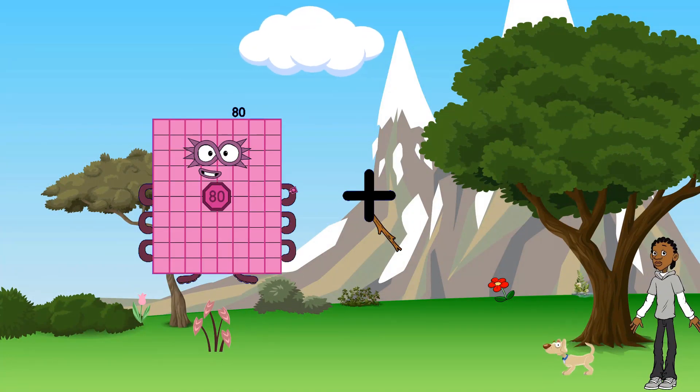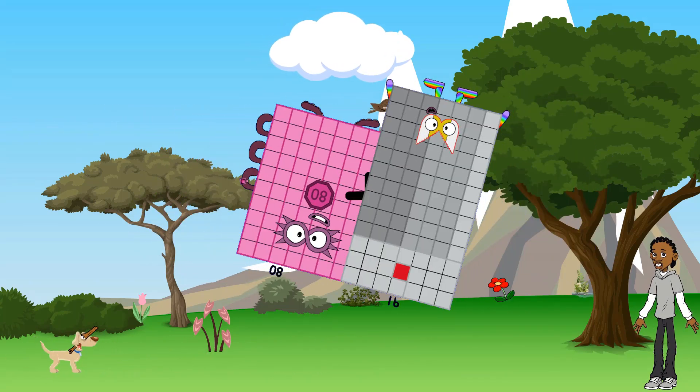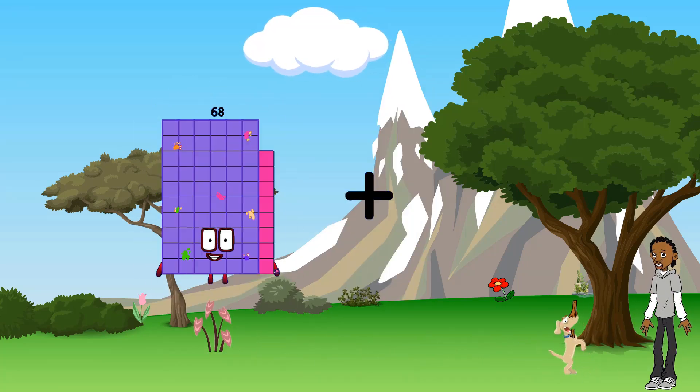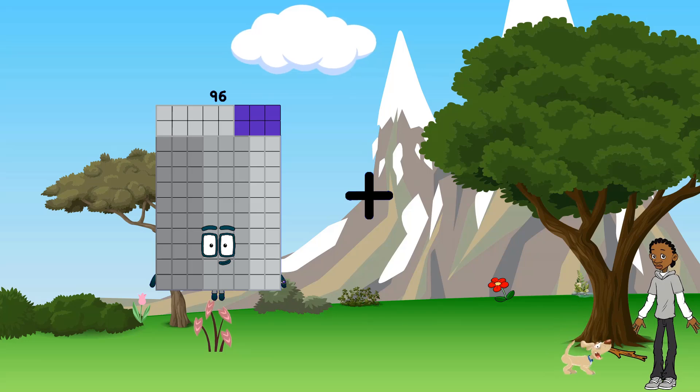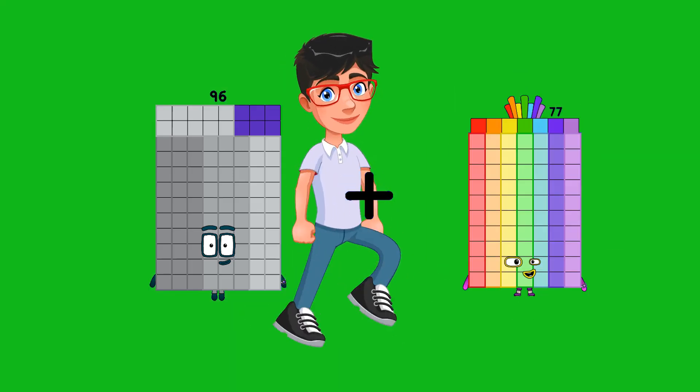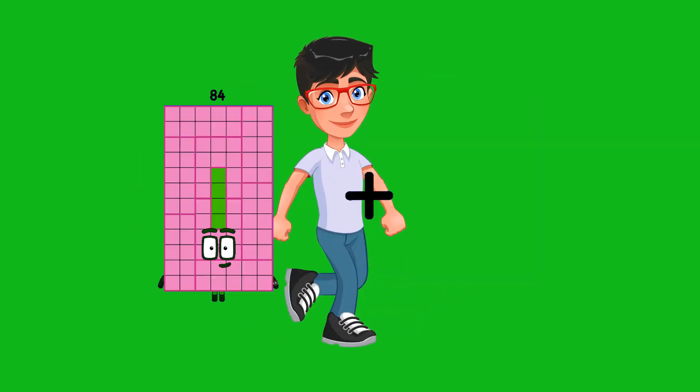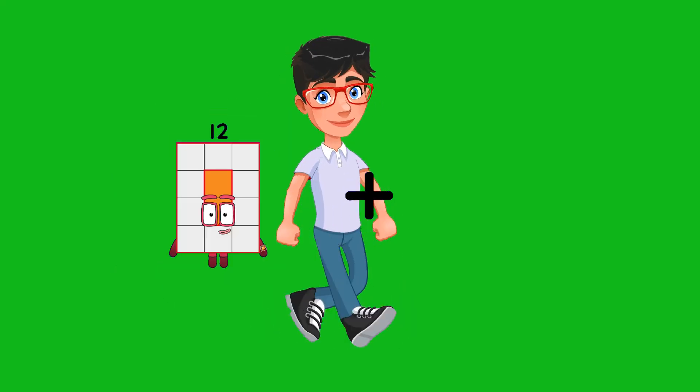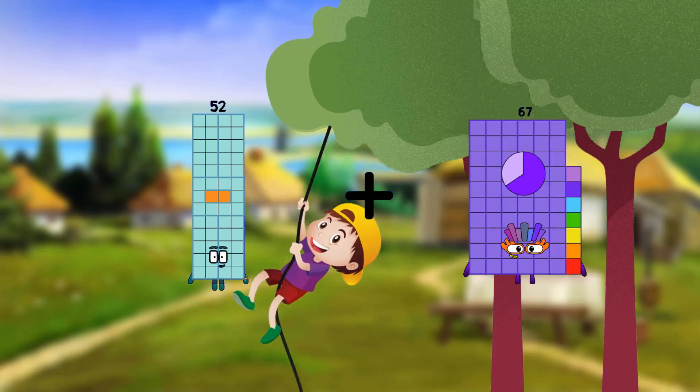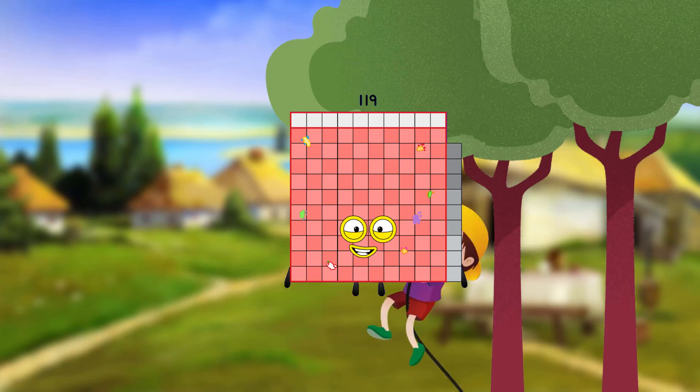80 plus 91 equals 171. 96 plus 77 equals 173. 52 plus 67 equals 119.